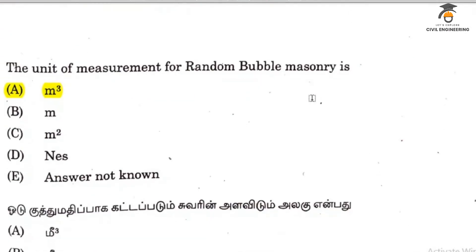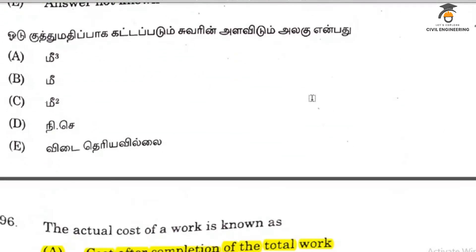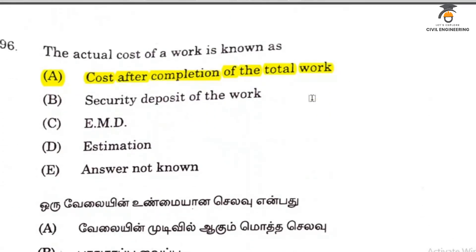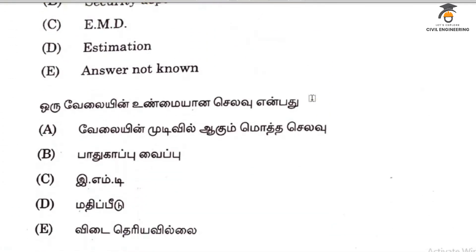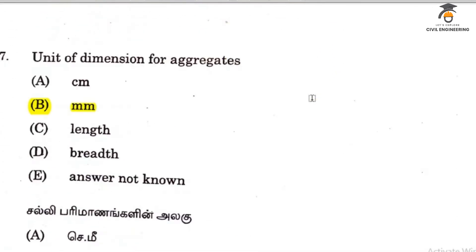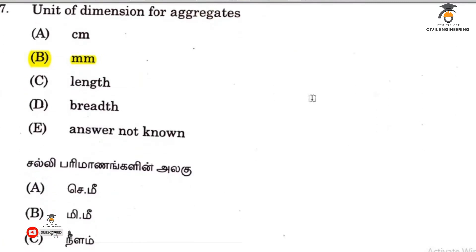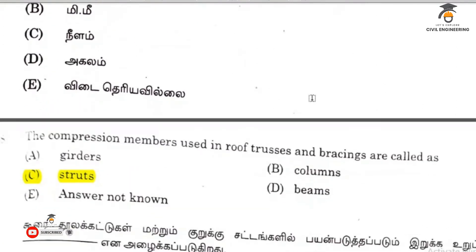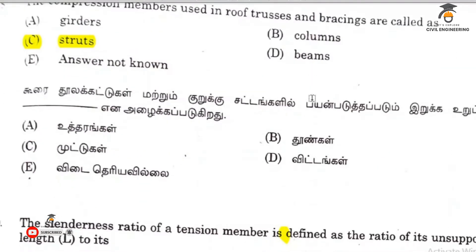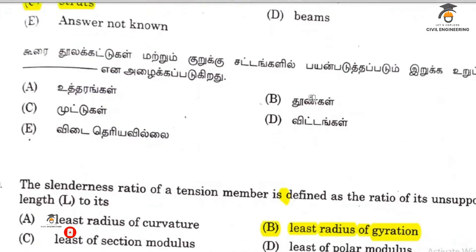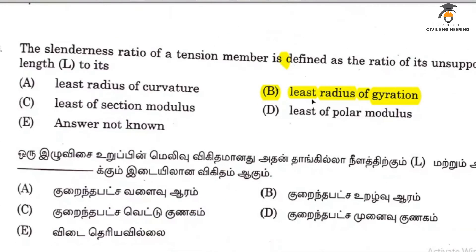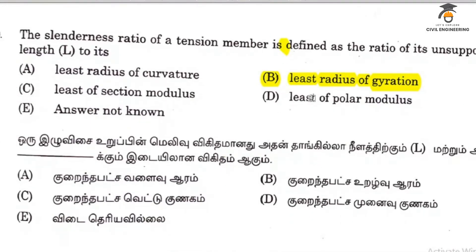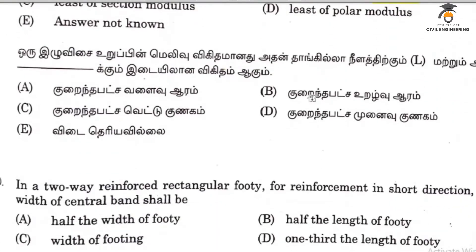The unit of measurement for earthwork is cubic centimeter. The actual cost of work is known after the completion of the total work. The unit dimension of aggregate is in mm. The compression member is called a strut. Option 99 answer is B. The least radius of gyration applies to question 100.